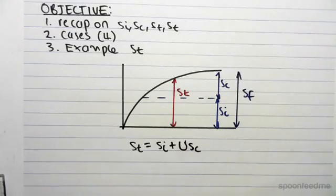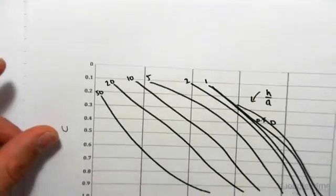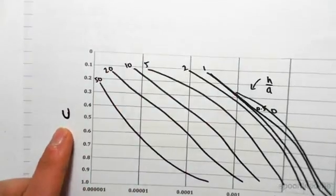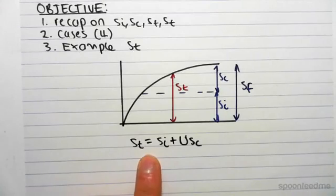So what we're going to be doing in this video is using this graph, which I want to explain in a second, to find U, the degree of consolidation, which will help us find the settlement at any time.